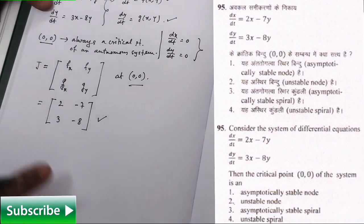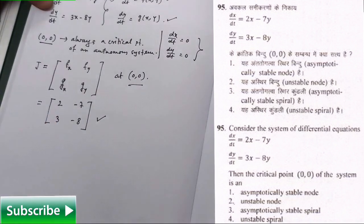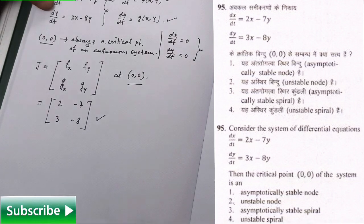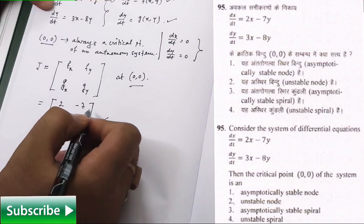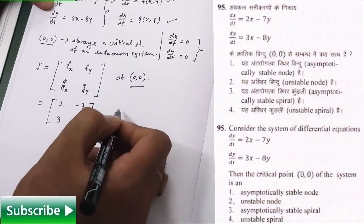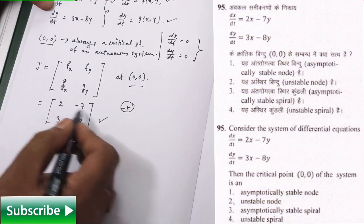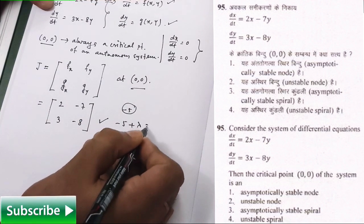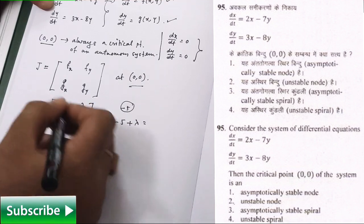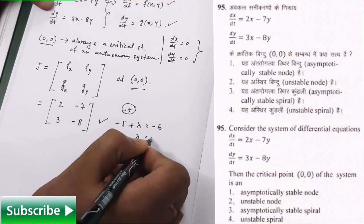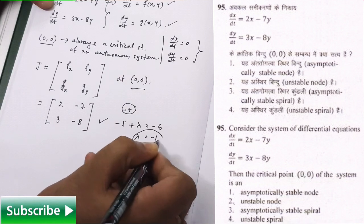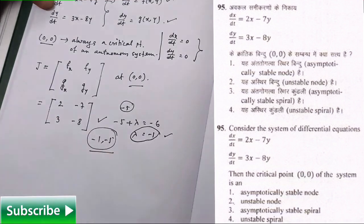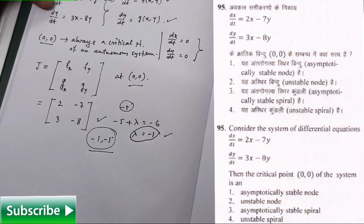The next step is to find out the eigenvalues of this matrix. So what will be the eigenvalues? Actually one eigenvalue, it is clearly visible that it is -5, row sum, isn't it? And another eigenvalue will be -5 plus lambda equal to the trace equal to -6, so it will be lambda equal to -1, fine. So -1 and -5 are the two eigenvalues we are having of this autonomous system.